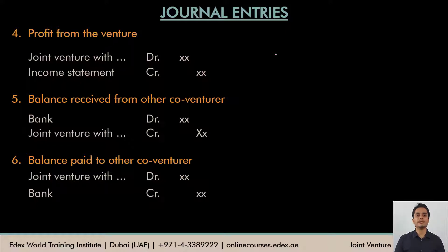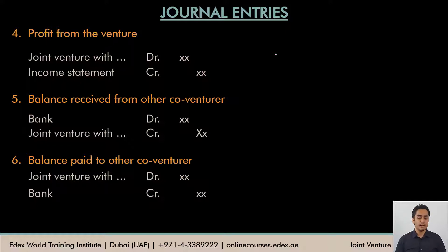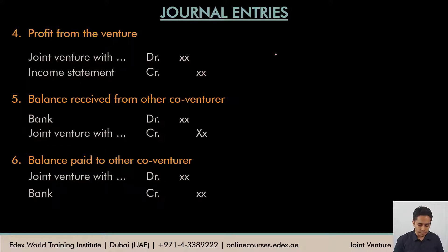This joint venture account is a personal account. If there's a debit balance left, it means we've contributed more resources than we have received, so the money has to be recovered from other venturers. But if there's a credit balance, it means this co-venturer has to pay other co-venturers the balance left. Once I do a solid example, these entries will also be very clear.